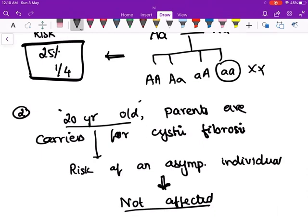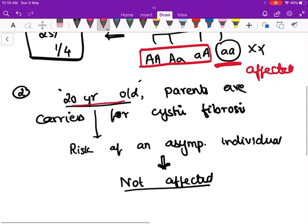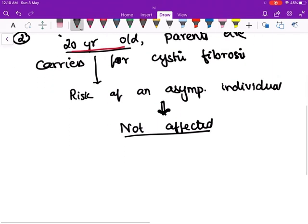This person can never have this genotype. This genotype is not possible because this genotype is of an affected individual. So this normal 20-year-old asymptomatic person cannot have a genotype of this. So the only three possible genotypes are these.